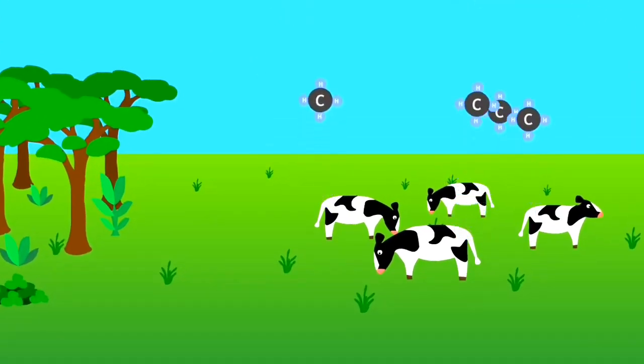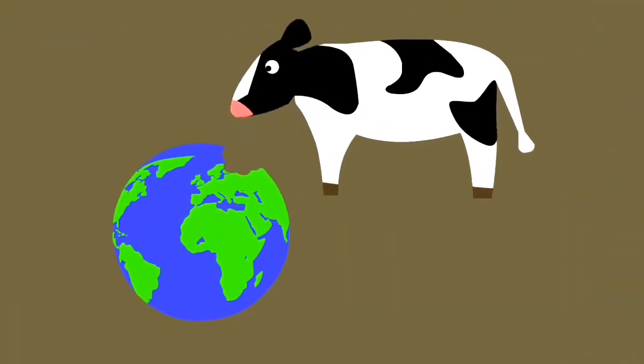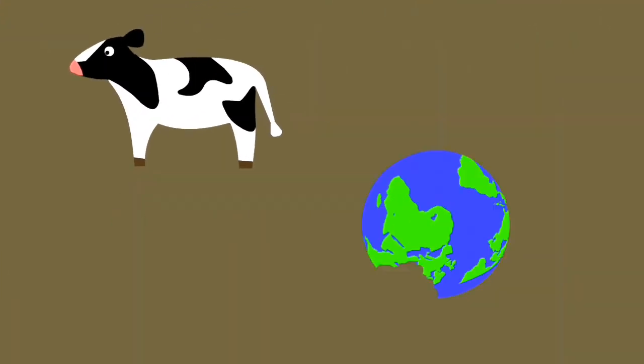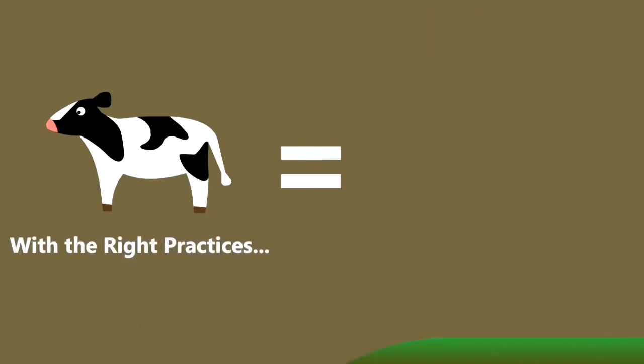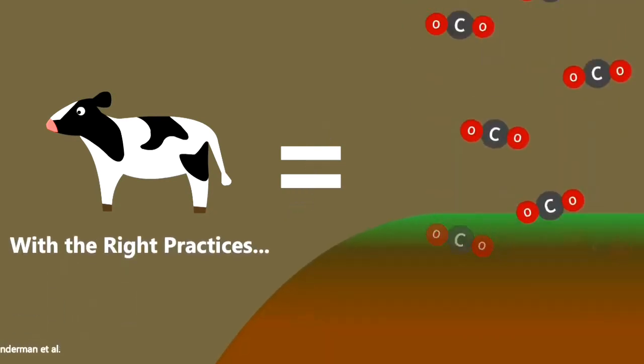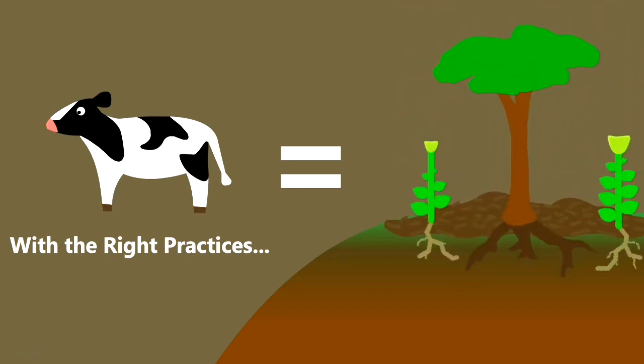From the release of methane to clearing forests for pasture land, cattle raising is known for being very environmentally destructive. But this is not inherent to grazing animals. If the right practices are put in place, enormous amounts of carbon can be sequestered into the ground, soil can be built, and even desertification can be reversed in a matter of years. Here's how it works.